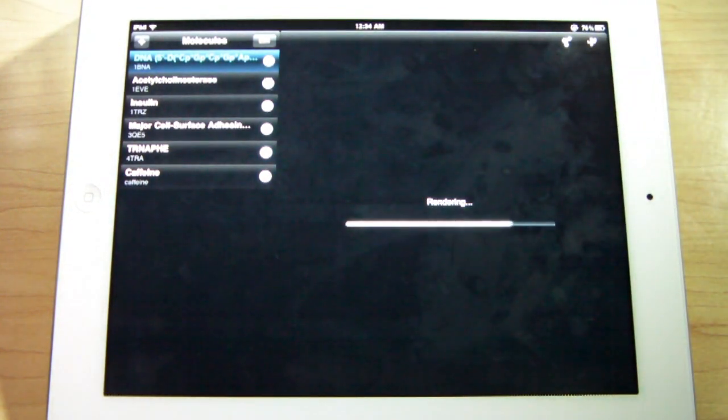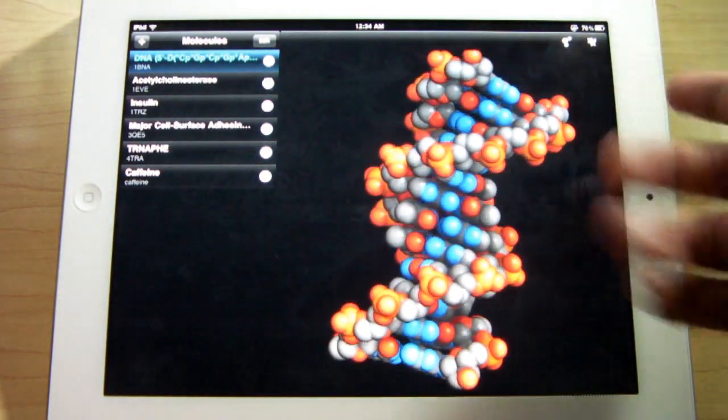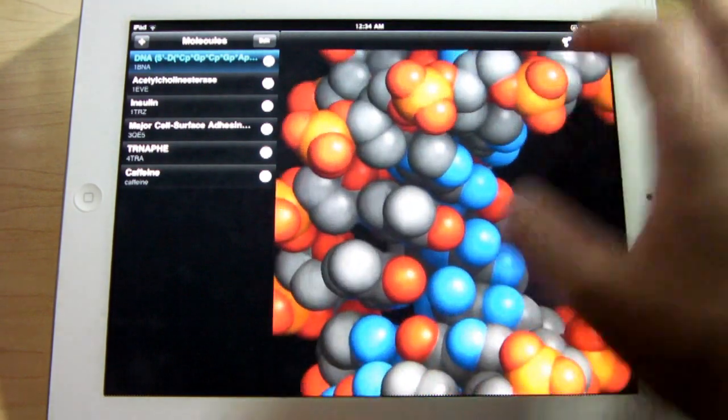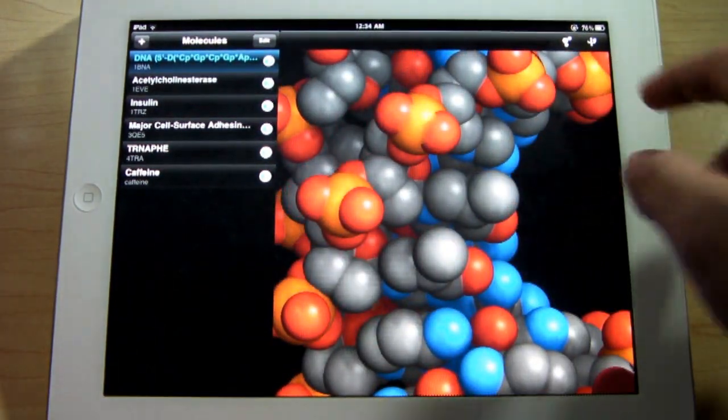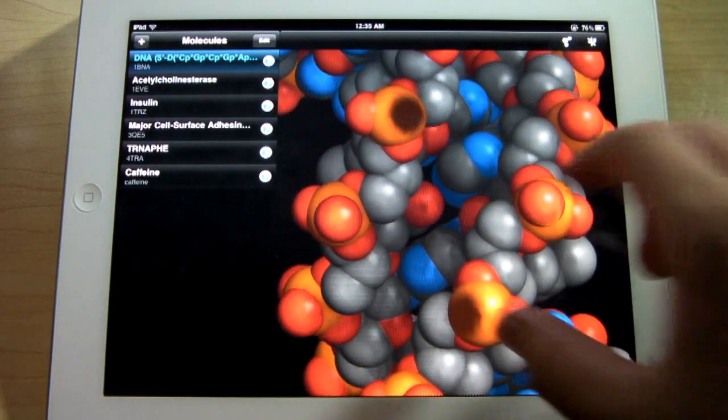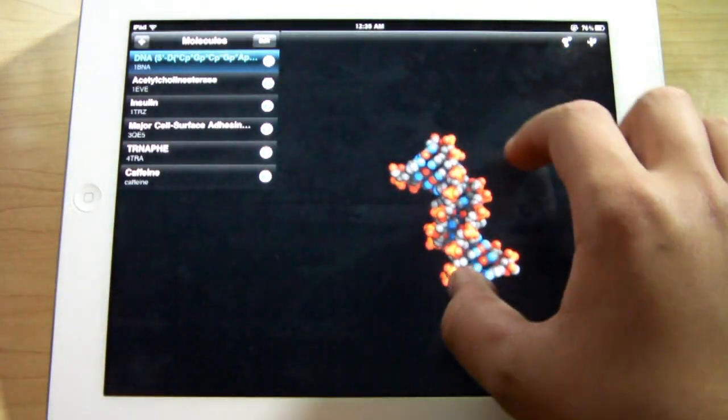You can go ahead and space fill it, like so, so you have a fatter version of the DNA in which you can look at the molecules a little bit better. Especially if you want to look far up, you can put on spin and it'll show you the molecules within DNA, which is pretty cool.